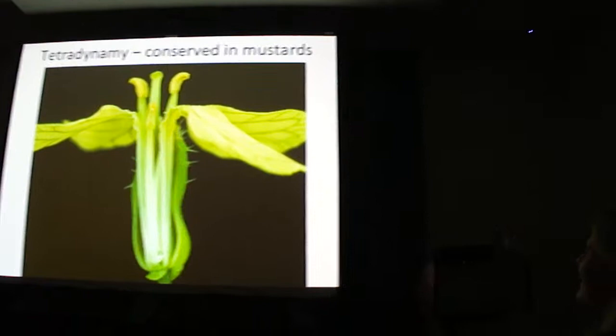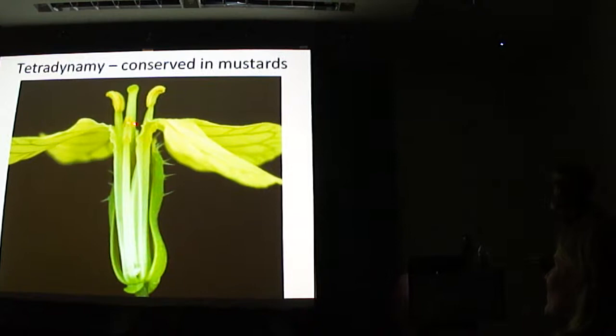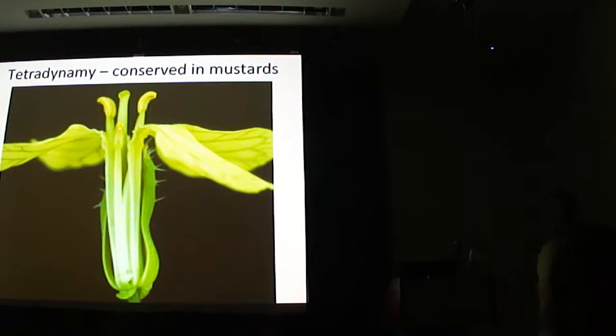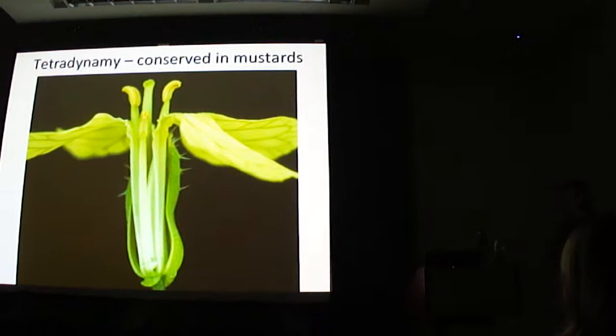The conserved trait is called tetradynamic — one of those botanical terms that people justly make fun of. What this means is the state of having two short stamens and four long stamens, with the anthers sticking up. This is a diagnostic and highly conserved trait in the mustard family Brassicaceae. Almost all 4,000 species have this condition of two short and four long stamens. A few have secondarily lost it. The ancestral condition, judged by the sister group Capers, is six stamens of equal height.